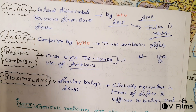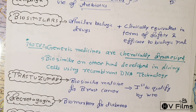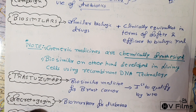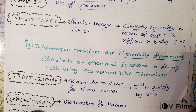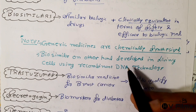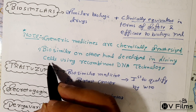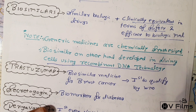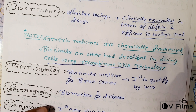Biosimilars are similar biologic drugs that are clinically equivalent in terms of safety and efficacy to biological medicines. The difference between biosimilars and generic medicines is that generic medicines are chemically synthesized, whereas biosimilars are developed in living cells using recombinant DNA technology.